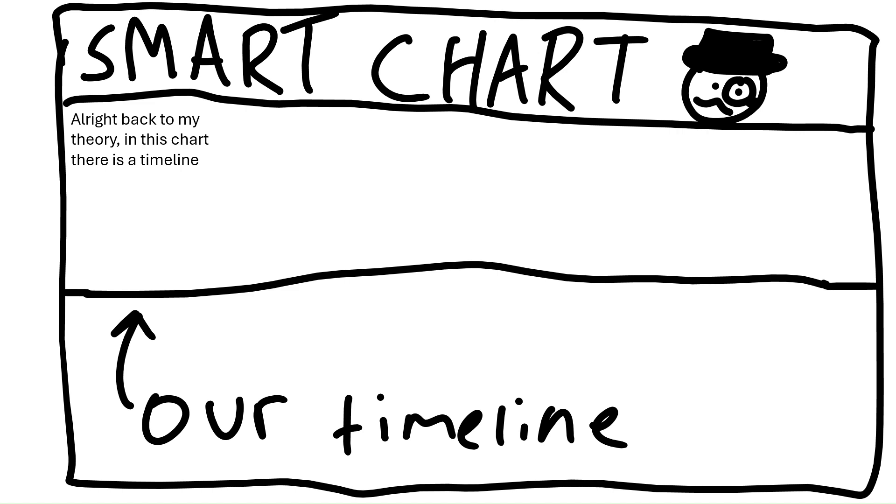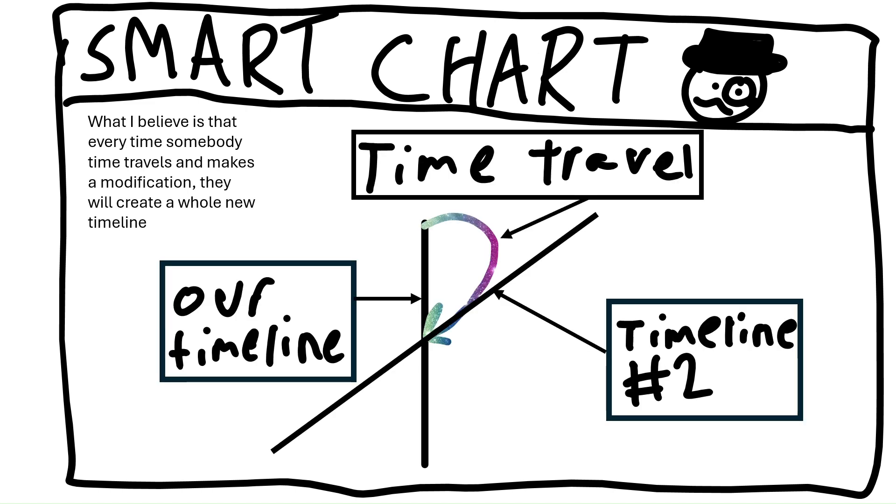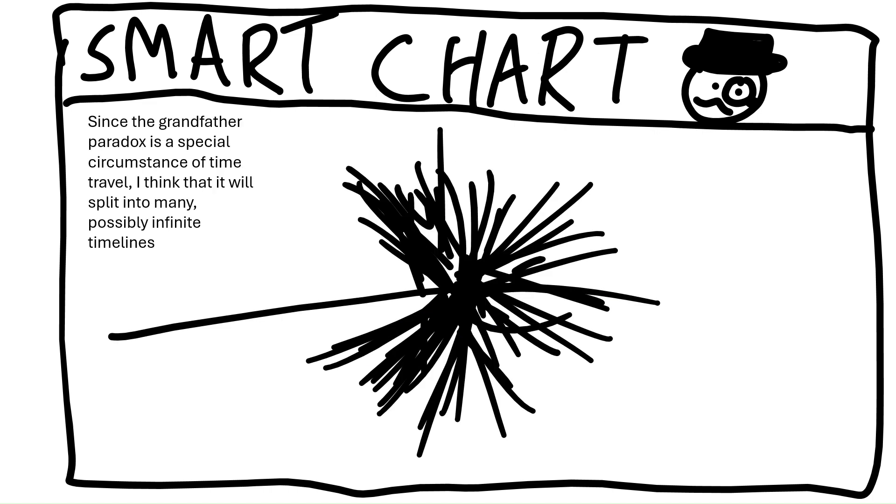Alright, back to my theory. In this chart, there's a timeline. What I believe is that every time someone time travels and makes a modification, they will create a whole new timeline.